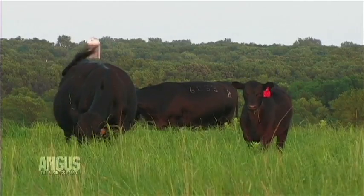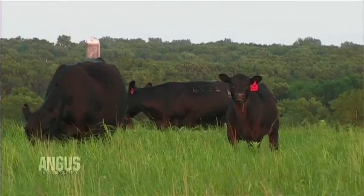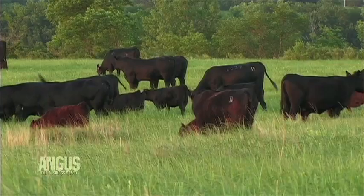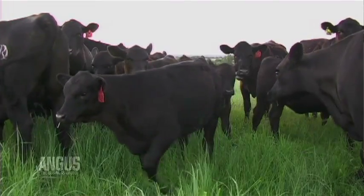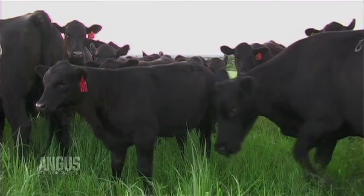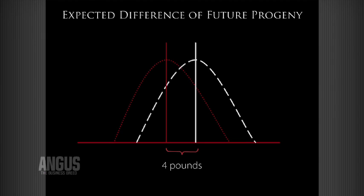EPDs are a selection tool to assist cattle producers in making directional genetic change in their herd. EPD stands for expected progeny difference. It's a prediction of how future progeny are expected to perform when comparing two animals or a particular animal to a breed. Most commonly, we see these tools used in sire selection. Keep in mind that EPDs do not predict actual performance, but only predict performance differences.